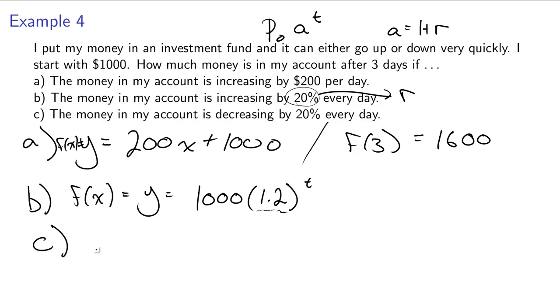With c, it's pretty similar. We start with $1,000, except r here is not going to be 0.2, even though we have that 20%. It says it's decreasing. Really bad investor, decreasing by 20% per day, so my a is going to be 1 minus 0.2, which in this case is 0.8.